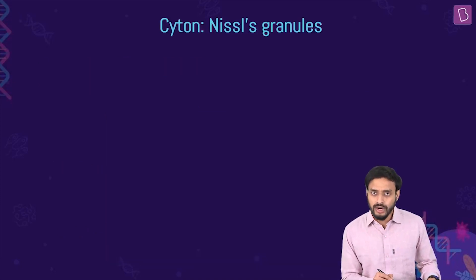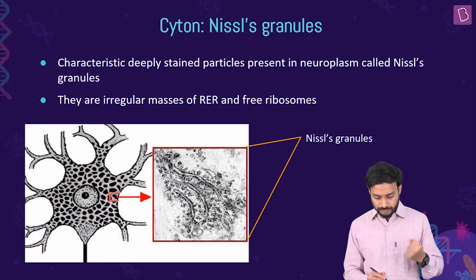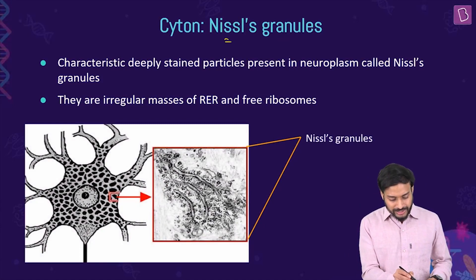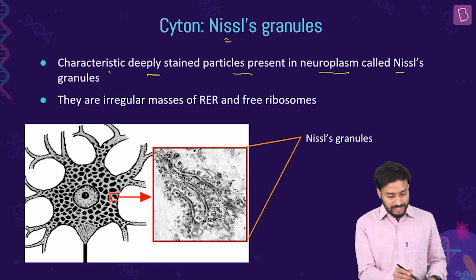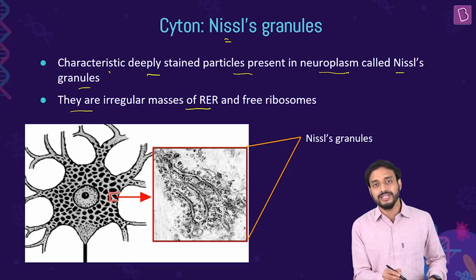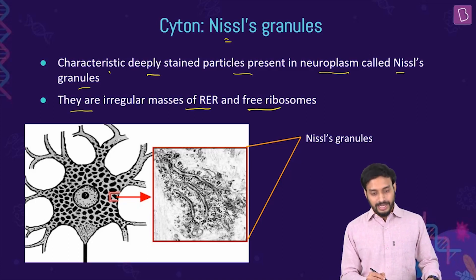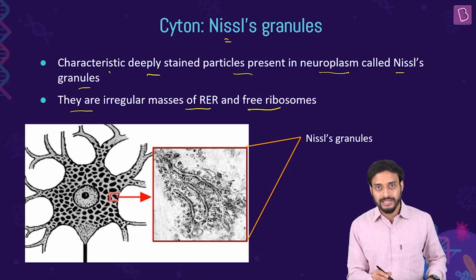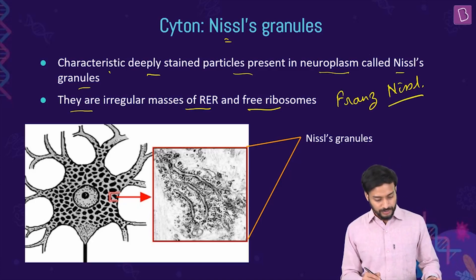Nissl's granules are deeply stained particles present in the neuroplasm. They are irregular masses of rough endoplasmic reticulum and free ribosomes, and can be easily viewed when staining. This name came from their discoverer, Franz Nissl.